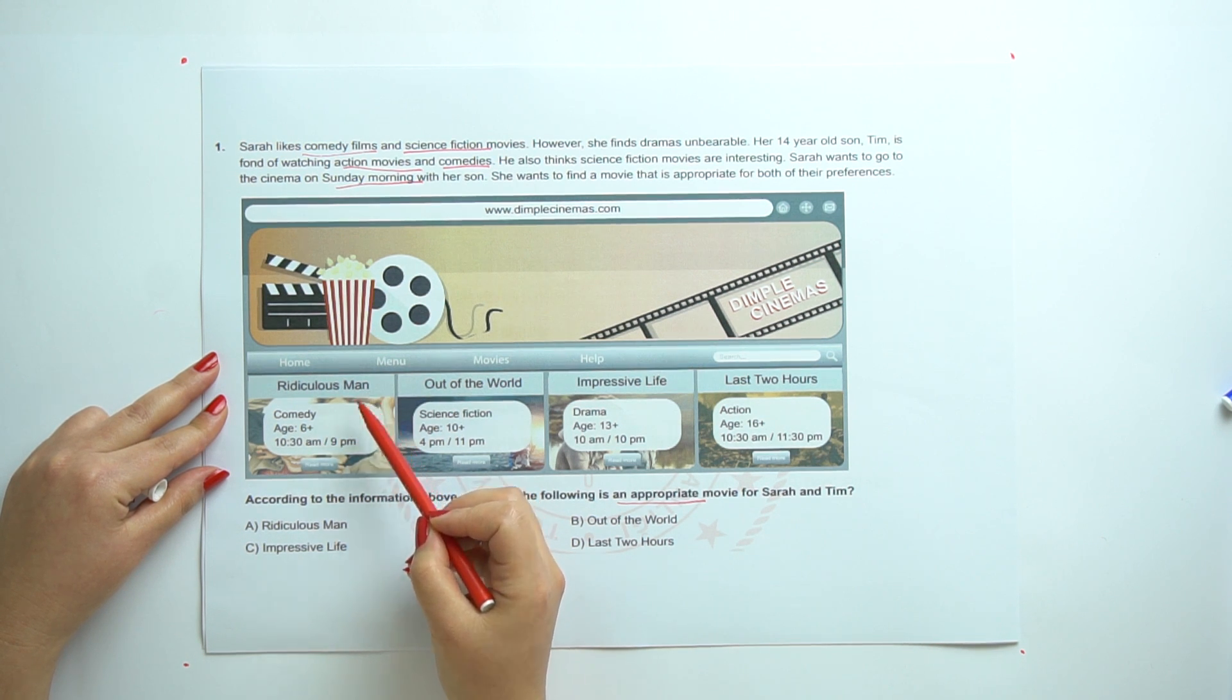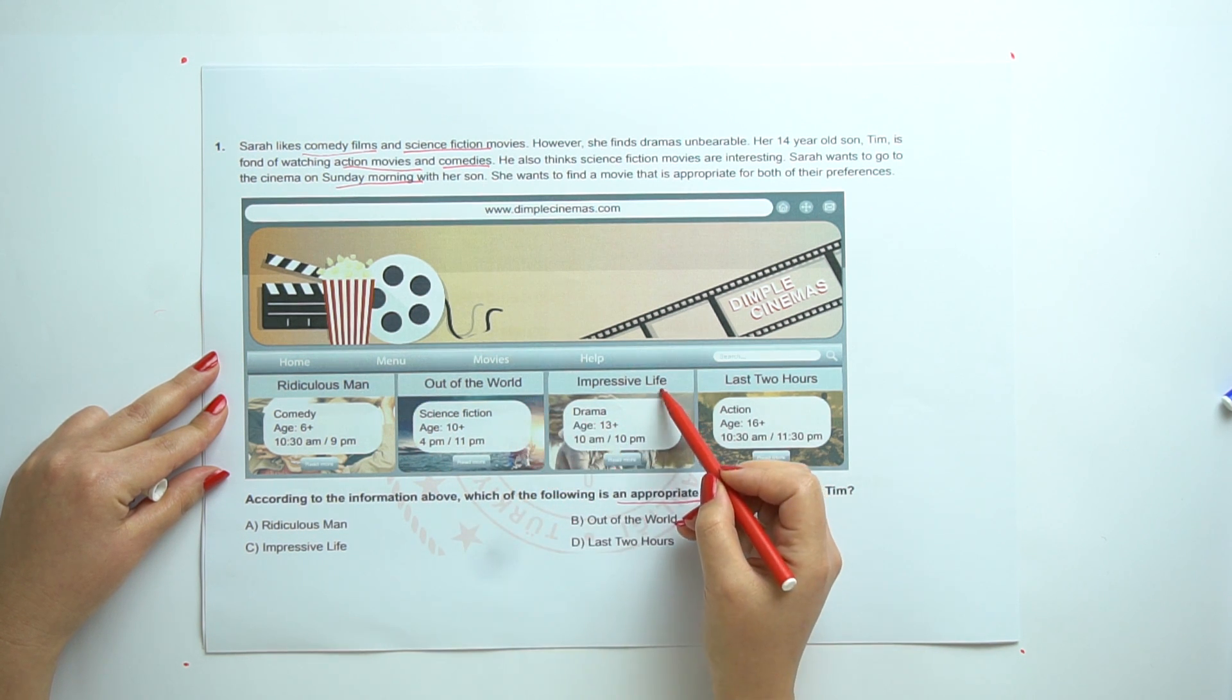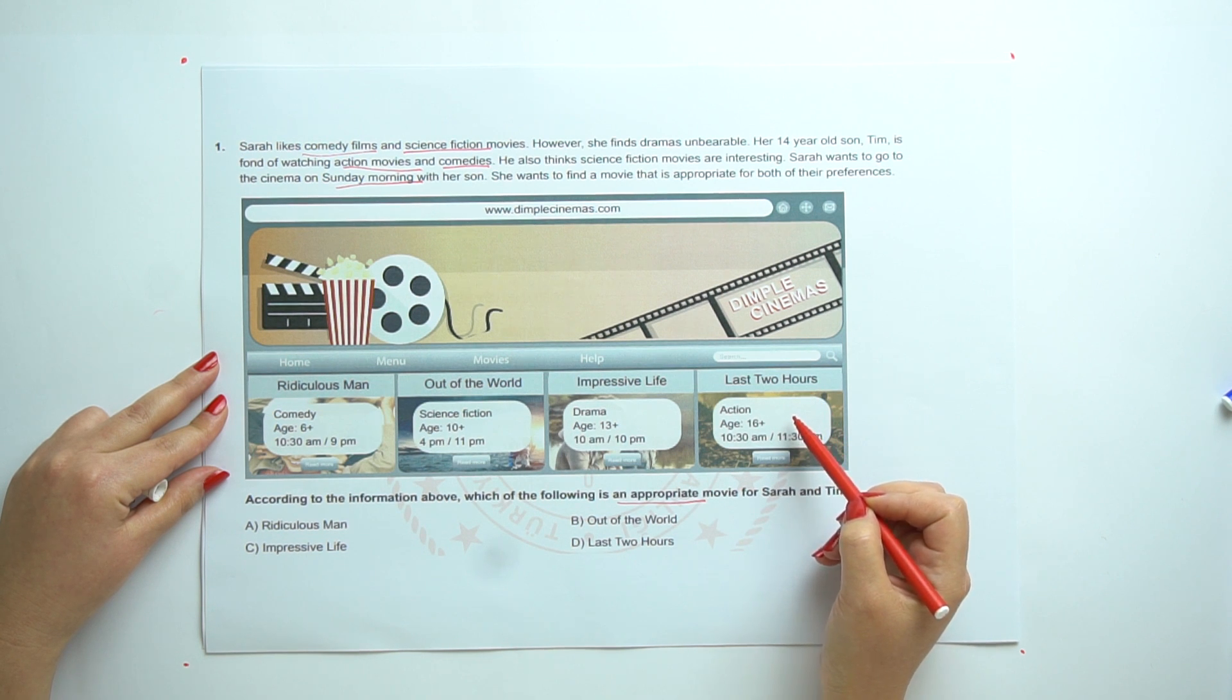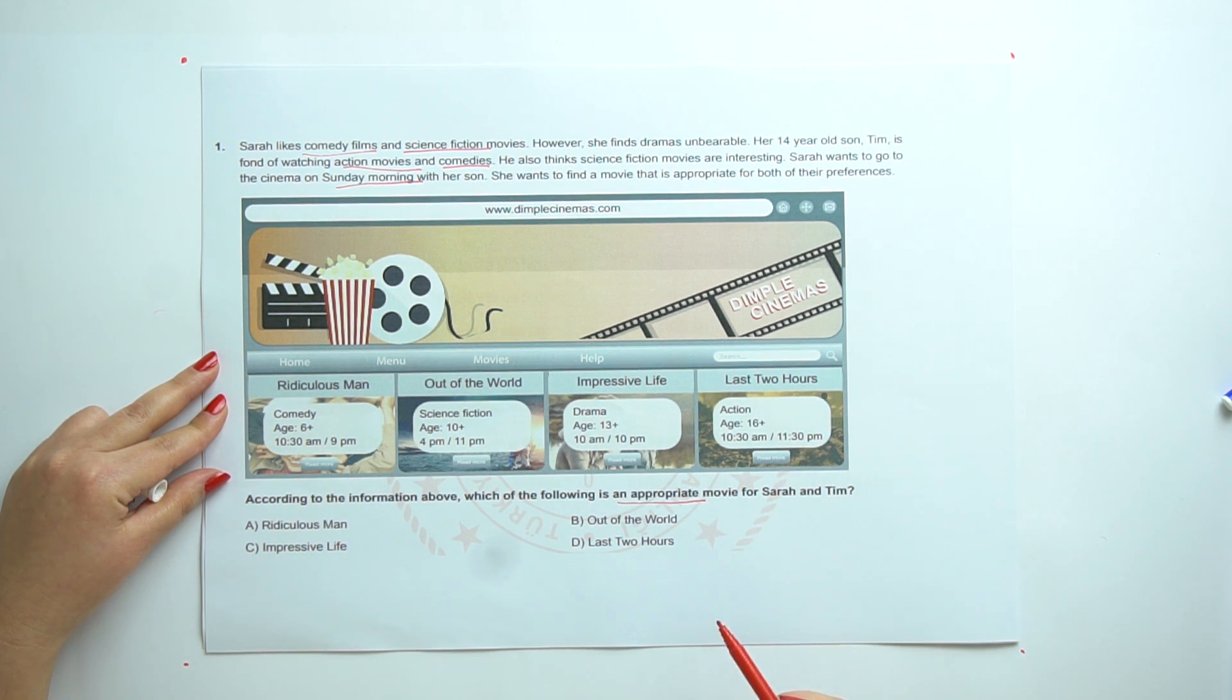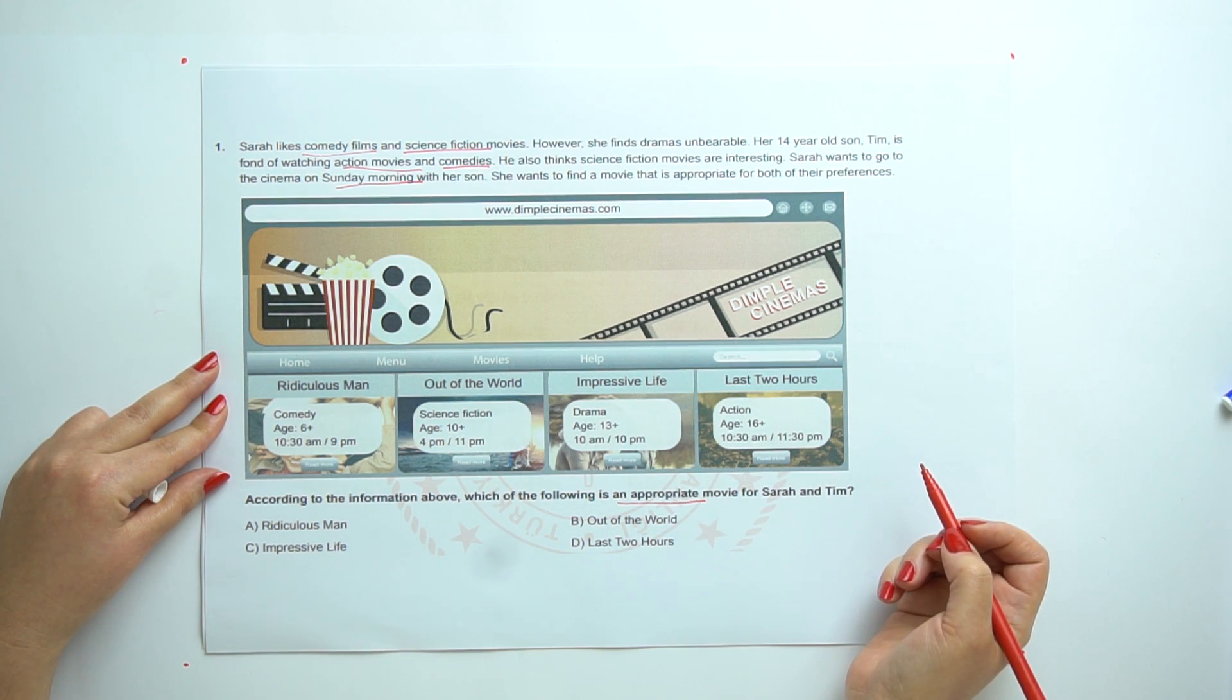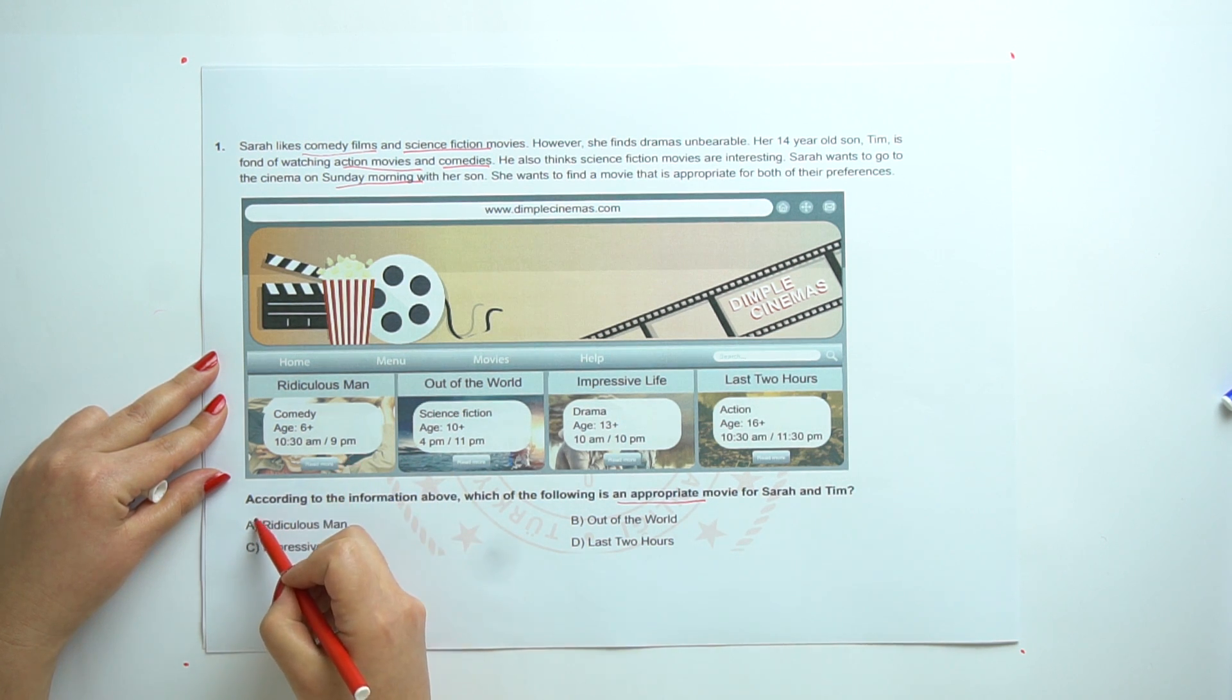Ridiculous Man. This is a kind of comedy film. Don't Be Worried. Science fiction. Impressive Life. Drama. Last Two Hours. Action movie. So, comedy film. They prefer comedy films. So, the answer is A. Okay?